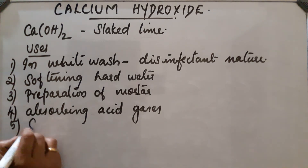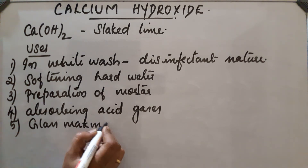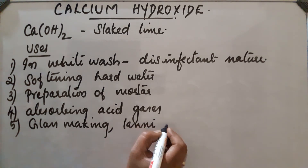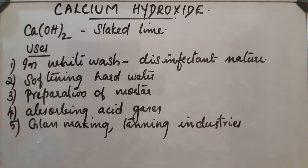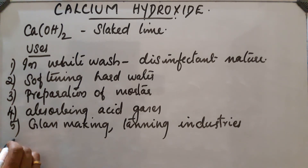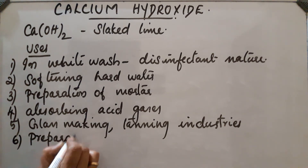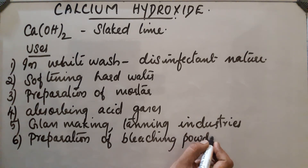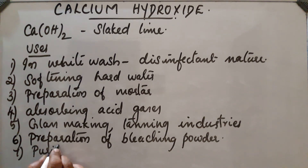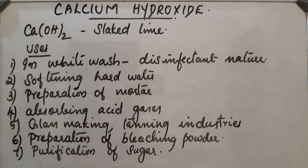Fifth, calcium hydroxide is used in glass making and the tanning industry, where it is used for the treatment of animal skins to convert them into leather. Sixth, it is used for the preparation of bleaching powder. Seventh, it is used for the purification of sugar. These are the important uses of calcium hydroxide.